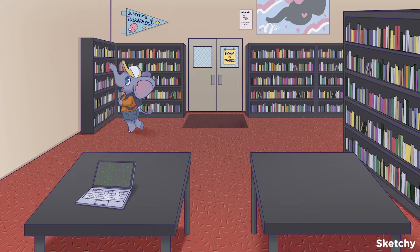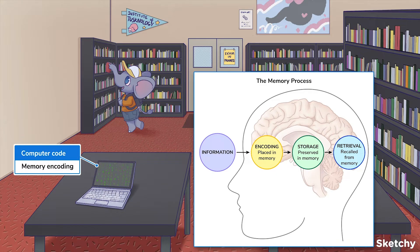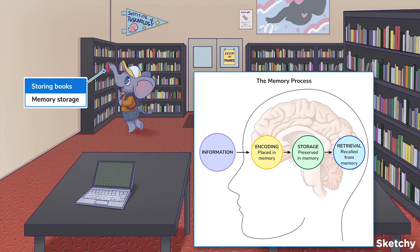The memory process consists of three steps: encoding, storage, and retrieval. We've represented memory encoding with this laptop running a code full of synthesized info, because encoding requires synthesizing outside information like the words spoken to you or the data in a graph. Once information is synthesized, it moves to memory storage.